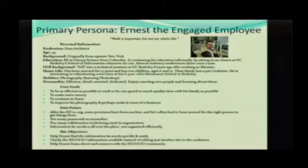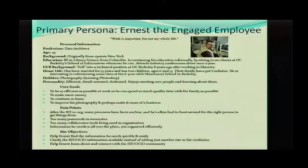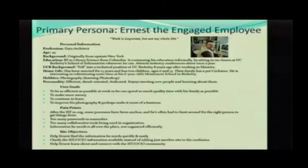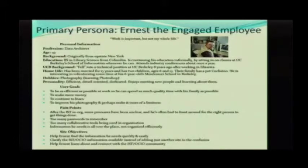It has a name. Our persona's name is Ernest the Engaged Employee — Ernest is his first name, D is his middle name, Engaged Employee is his last name. Really do give them a name. There's personal information: profession, age, background — originally from upstate New York. What's their education? Their education will be really important to your design. In this case it says UCB background — UCB is the organization, a university, that this person works for. Their background: they fell into a technical position eight years ago while working in the libraries.